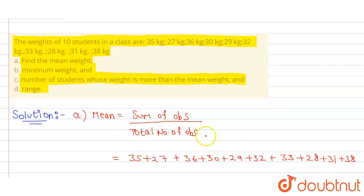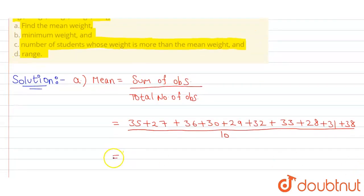Upon total number of observations, there are total 10 students, so total number of observations will be 10. The sum of all this will be 319 upon 10, which is 31.9. So our mean weight is 31.9 kg.